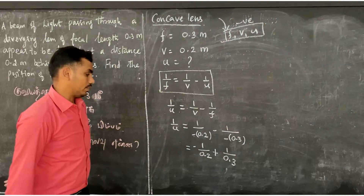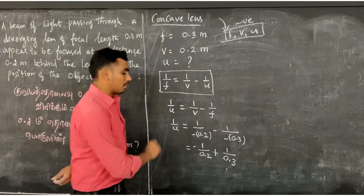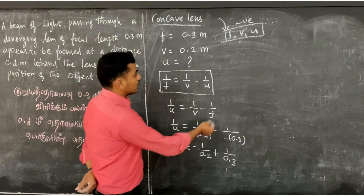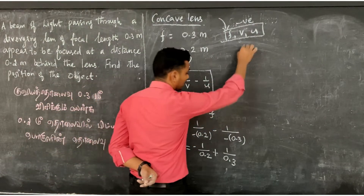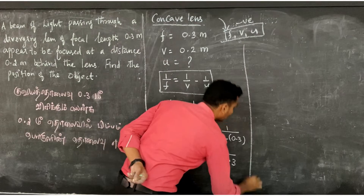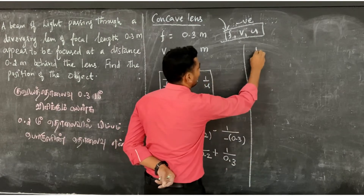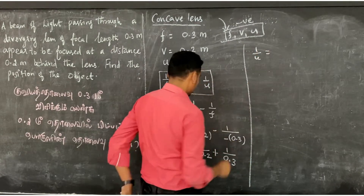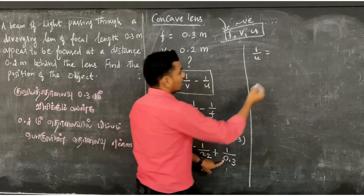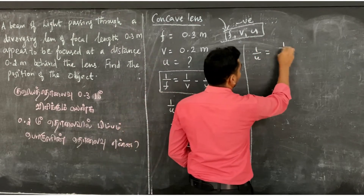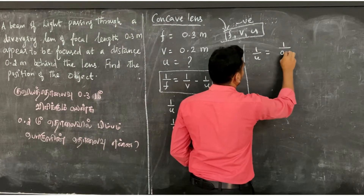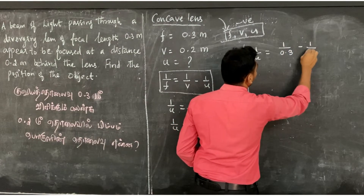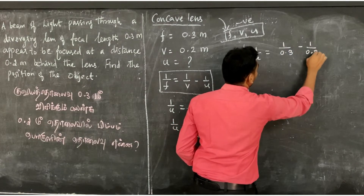That's right. So applying Cartesian sign convention and rearranging: 1 by U equals plus 1 by 0.3 minus 1 by 0.2.